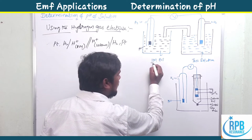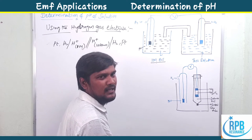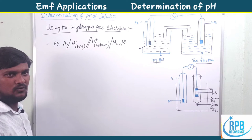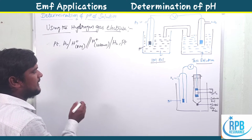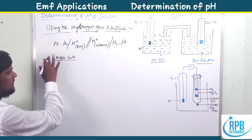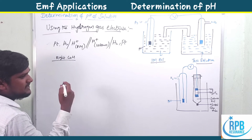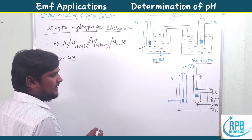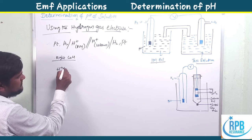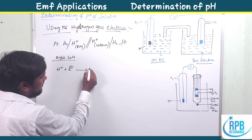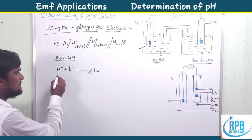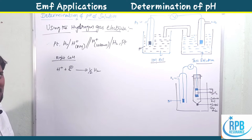We know the concentration of the known solution as well as the EMF of the hydrogen electrode, but we don't know the concentration of the unknown solution. So we will focus on the right-hand side electrode — E right cell. The right-hand cell is the cathode, which undergoes reduction. Reduction is gaining of electrons. Here H+ gains electrons and forms H2.